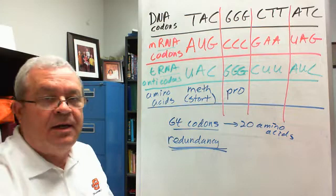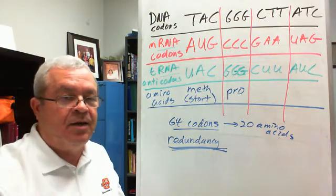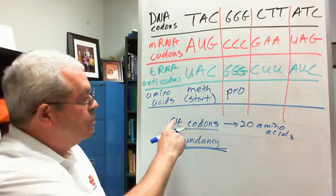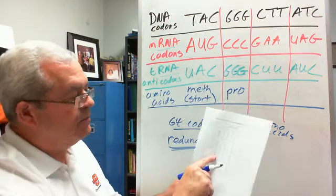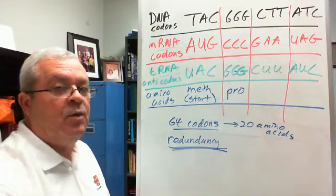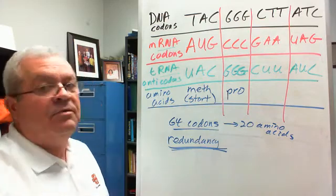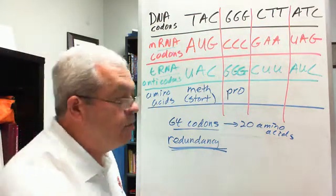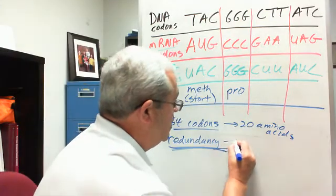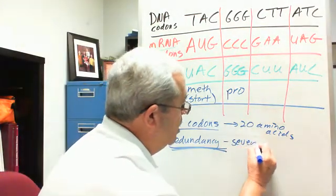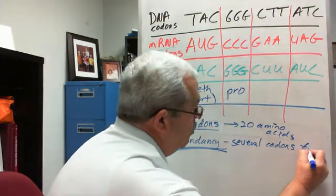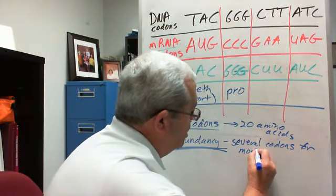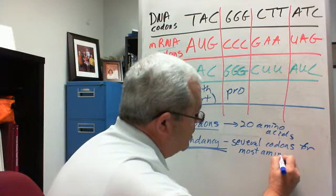Well, what is it talking about here in the context of the genetic code? That means there's several codons for most amino acids. Fact is, that first one, meth, is the only one that just has one codon. For all the rest, there are several codons for most amino acids.